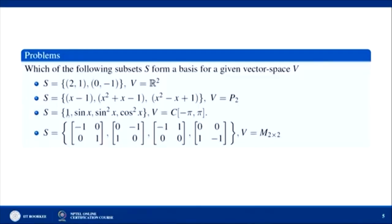For the third example, 1 can be written as sin²x + cos²x, which is a linear combination of the other two elements. So this set is linearly dependent and will not be a basis of the vector space.